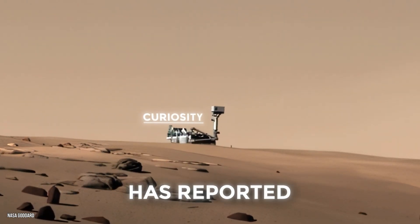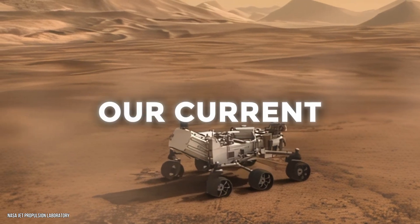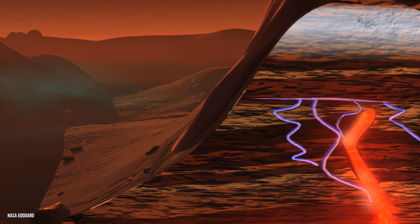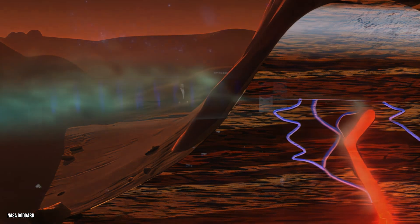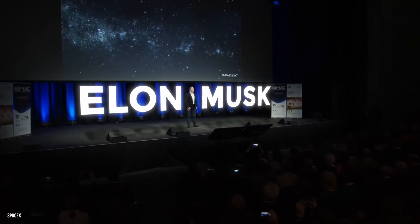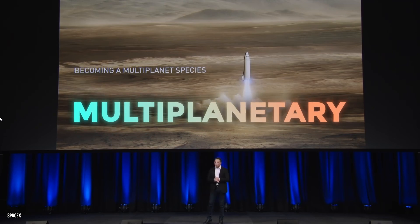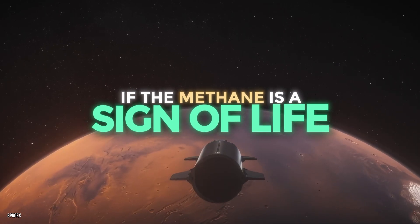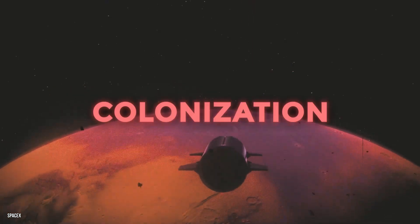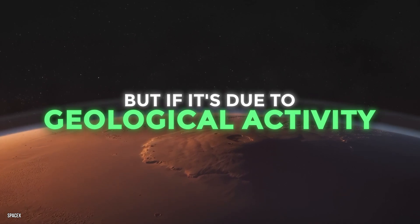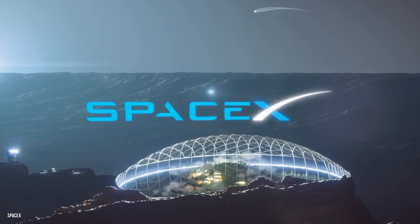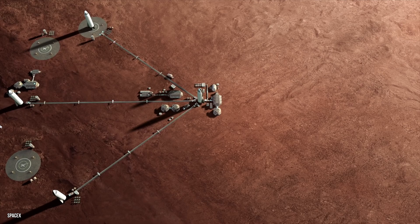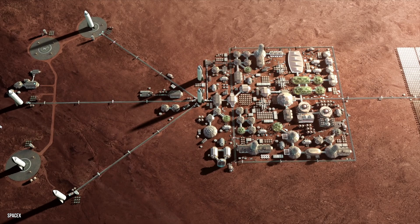But what's disturbing is the inconsistent nature of its appearance. The Mars rover Curiosity has reported fluctuating levels of methane that don't match our current understanding of how the gas should behave. This has led to numerous theories, ranging from unknown geological processes to the tantalizing possibility of microbial life. Enter SpaceX and its founder Elon Musk. Musk's vision is to make life multi-planetary, starting with Mars. The mystery of Martian methane could significantly impact these plans. If the methane is a sign of life, it raises ethical questions about colonization. Alternatively, if it's due to geological activity, it could influence how and where SpaceX establishes its bases.